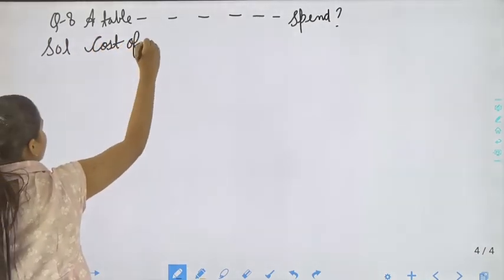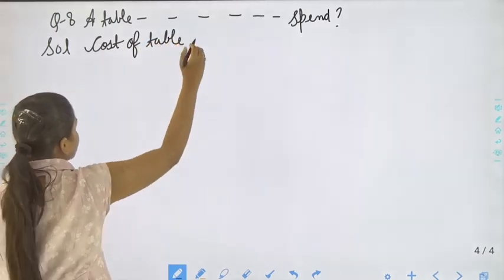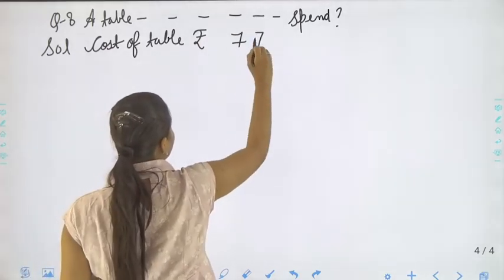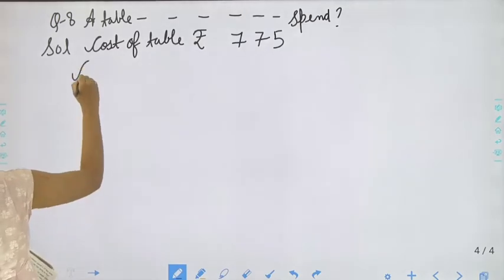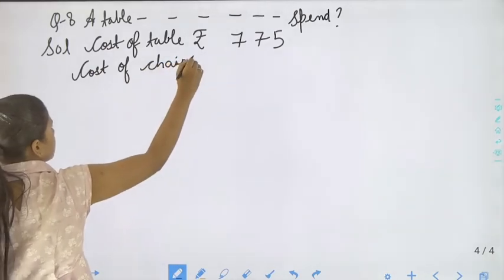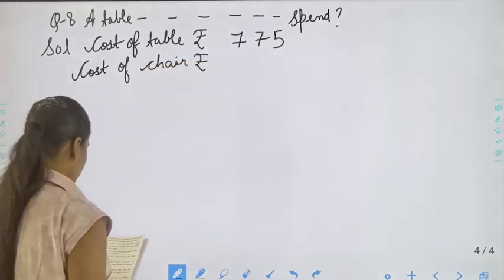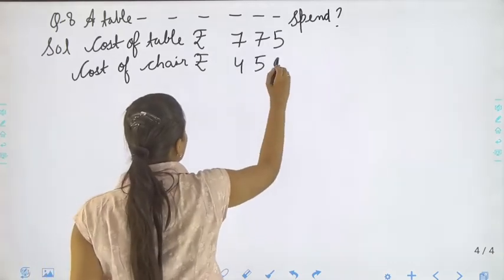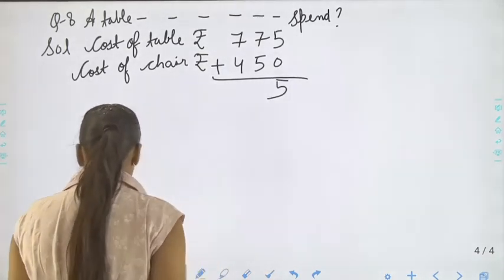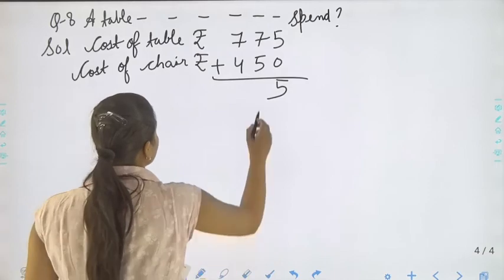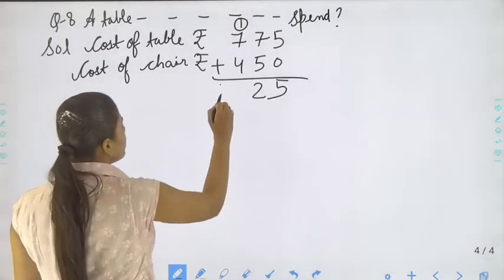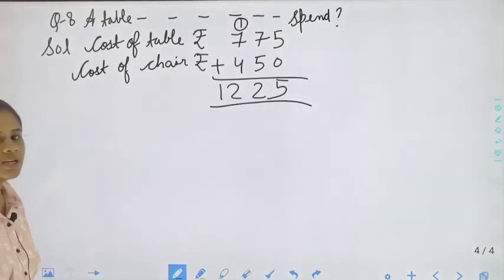Cost of table, rupees 775. Cost of chair, rupees 450. Again, we have to do addition. That is 5, 7 plus 5 it will be 12, 7 plus 1 is 8, 8 plus 4 is 12. That is 1225.